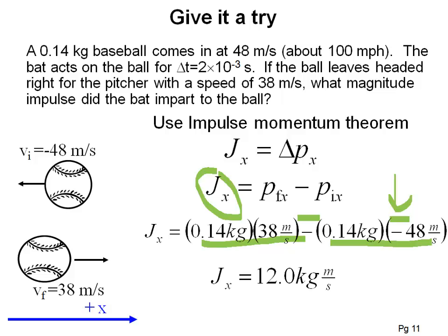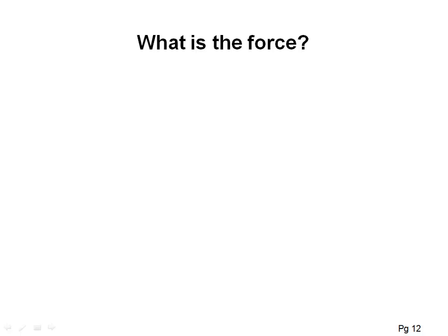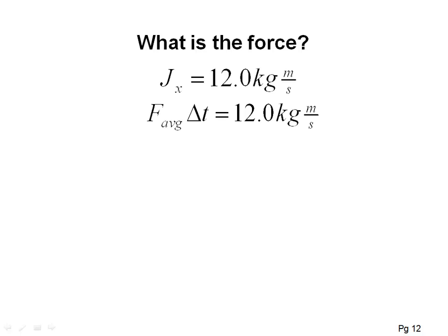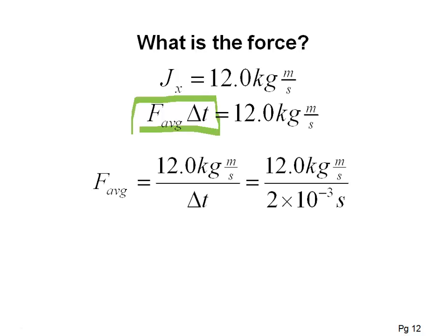A follow-up question often asked is: what is the size of the force? To find that, we use the alternative definition of impulse: impulse equals average force times the change in time. The problem gives us Δt = 2×10⁻³ seconds. Dividing the impulse of 12 kg·m/s by that time gives an average force of about 6,000 newtons — keeping in mind we used typical baseball velocities.